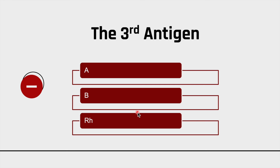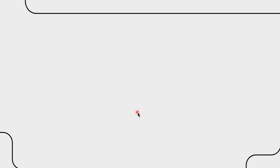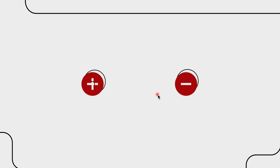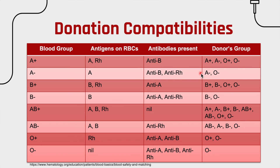The issue with Rh grouping is that people who are Rh negative have antibodies against the Rh antigen, so Rh positive people cannot donate blood to Rh negative people. The small ABO table we made earlier — A, B, AB, and O — has now been extended into a much bigger table that includes positive and negative variants for each group.